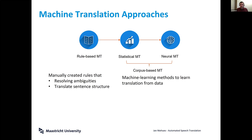Instead, the idea is to give the computer examples — to show it how humans translate — and then enable it to automatically learn itself how to best perform the translation. In statistical machine translation this was done using basic statistics about how often a word is translated into another.